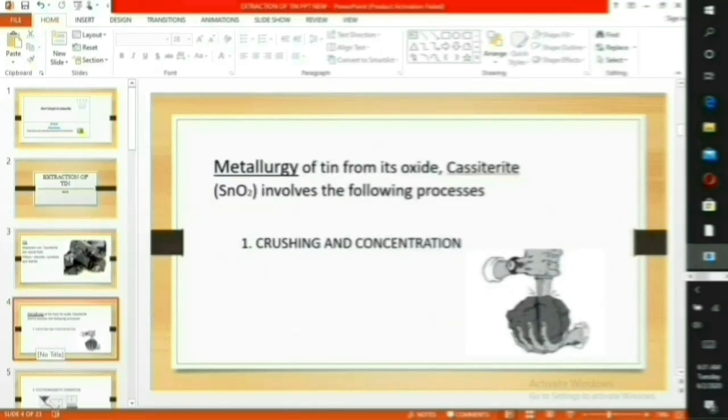The metallurgy obtained from its ore, cassiterite, involves the following processes. 1. Crushing and concentration.